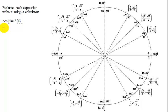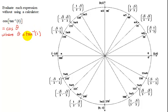Before I do anything else, I'm going to write this as: this means find the cosine of theta, where theta is the inverse tangent of 1. So I'm kind of breaking it into pieces. Now remember, what does the inverse tangent of 1 mean? This means that the tangent of theta equals 1.